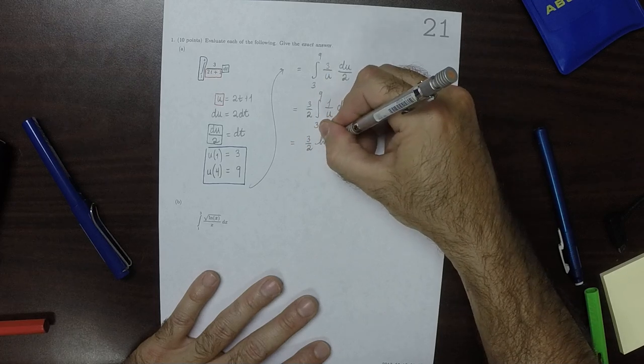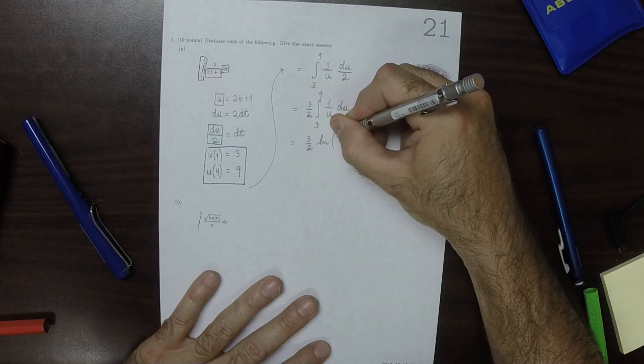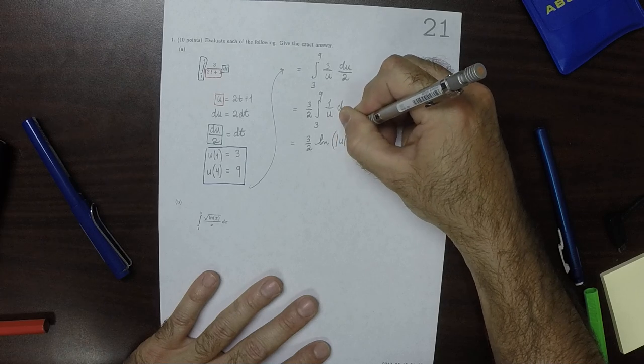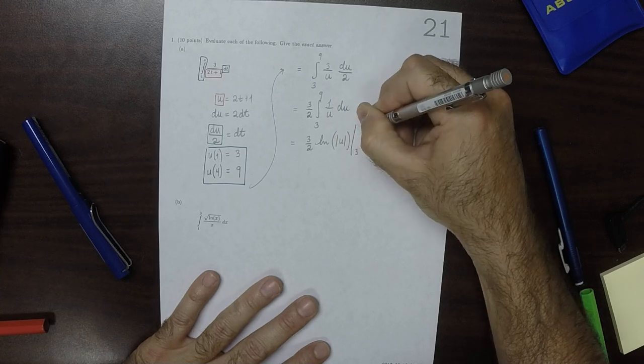That's 3 halves log absolute value u, evaluated from 3 to 9.